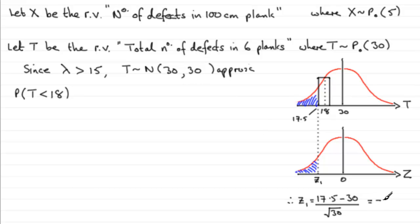So working out the probability that T is less than 18 is now going to be exactly the same as the probability of Z being less than minus 2.282 and so on.